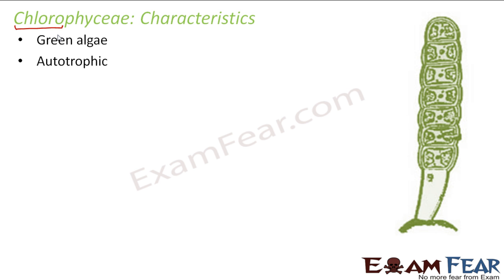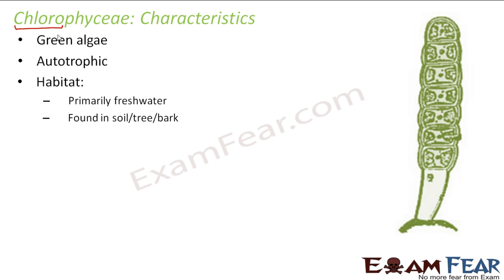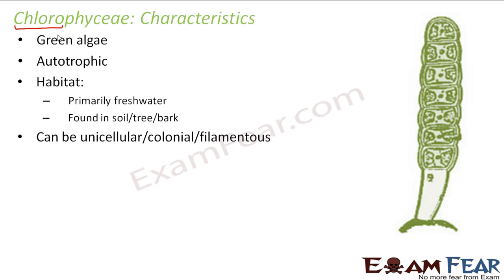Chlorophyceae are autotrophic because they have chlorophyll and can prepare their own food in the presence of sunlight. Talking about their habitat, they are primarily freshwater; however, they are also found in soil and on tree bark, provided there is some moisture.